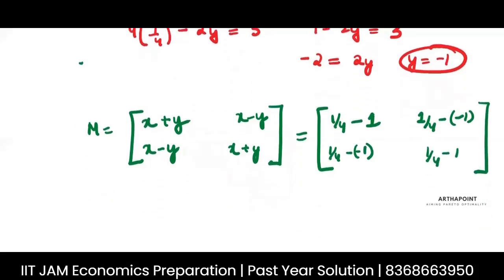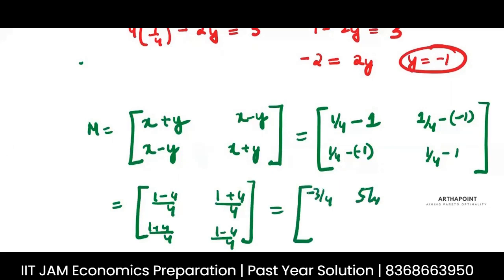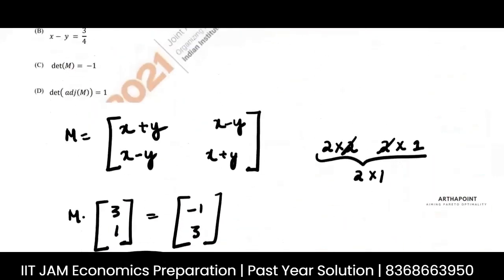So this is going to be 1 minus 4 by 4, 1 plus 4 by 4, 1 plus 4 by 4, 1 minus 4 by 4. My matrix would be minus 3 by 4, 5 by 4, 5 by 4, and minus 3 by 4. This is my matrix.